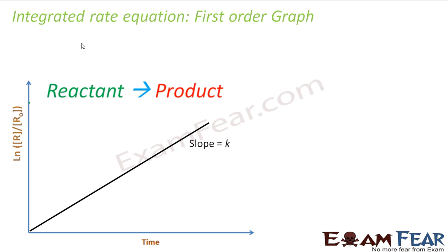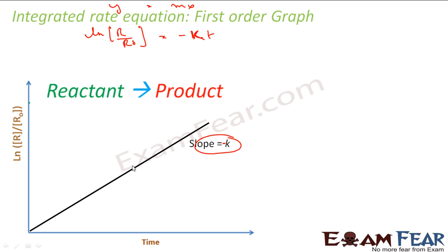Now let's plot the graph. The equation is ln(R/R₀) = minus kt. Comparing with y = mx, the slope is minus k. Plotting ln(R/R₀) on the y-axis and t on the x-axis, you get a straight line with slope minus k.